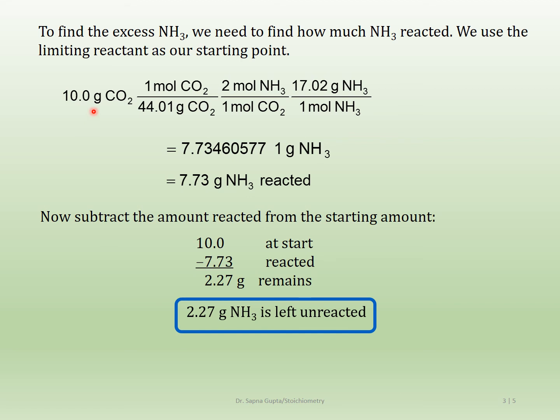The limiting reagent, carbon dioxide, was completely consumed in the reaction. Now that we know how to do limiting reagent problems, you should be able to figure out excess and limiting reagents using two quantities. If you had three starting materials, the calculation would be a little longer, but the process is the same.